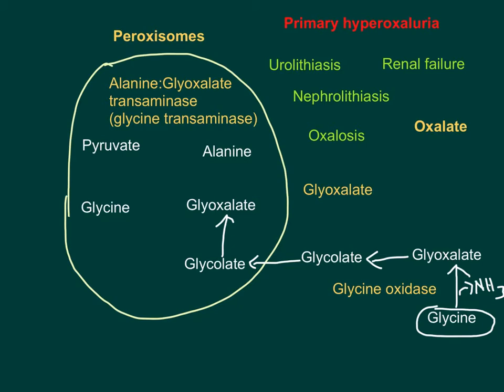The glyoxalate in the peroxisome then undergoes a transamination reaction where the amino group donor is alanine — rather than the usual glutamate to alpha-ketoglutarate. Alanine acts as the amino group donor here, so glyoxalate is converted to glycine, and alanine is converted to pyruvate. This reaction is catalyzed by alanine glyoxalate transaminase, also called glycine transaminase, which needs vitamin B6 in the form of pyridoxal phosphate.